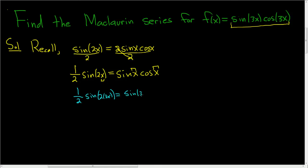And on the right-hand side, we'll have sine 3x cosine 3x, which is what we want. This is our f of x.